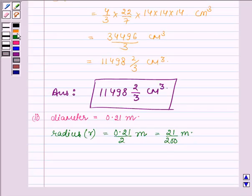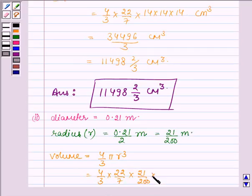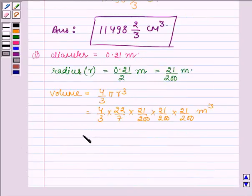Now let us calculate the volume. Volume is equal to 4 upon 3 into π into r cube, that is 4 upon 3 into 22 upon 7 into 21 upon 200 into 21 upon 200 into 21 upon 200 meters cube. And on simplifying this further we get 0.004851 meters cube.